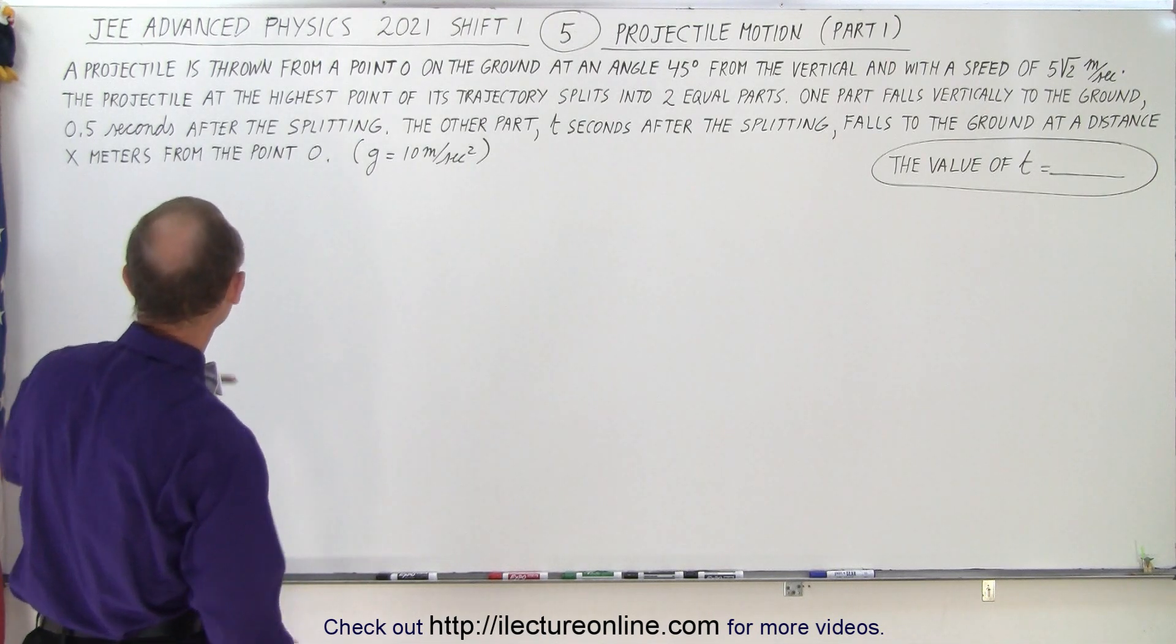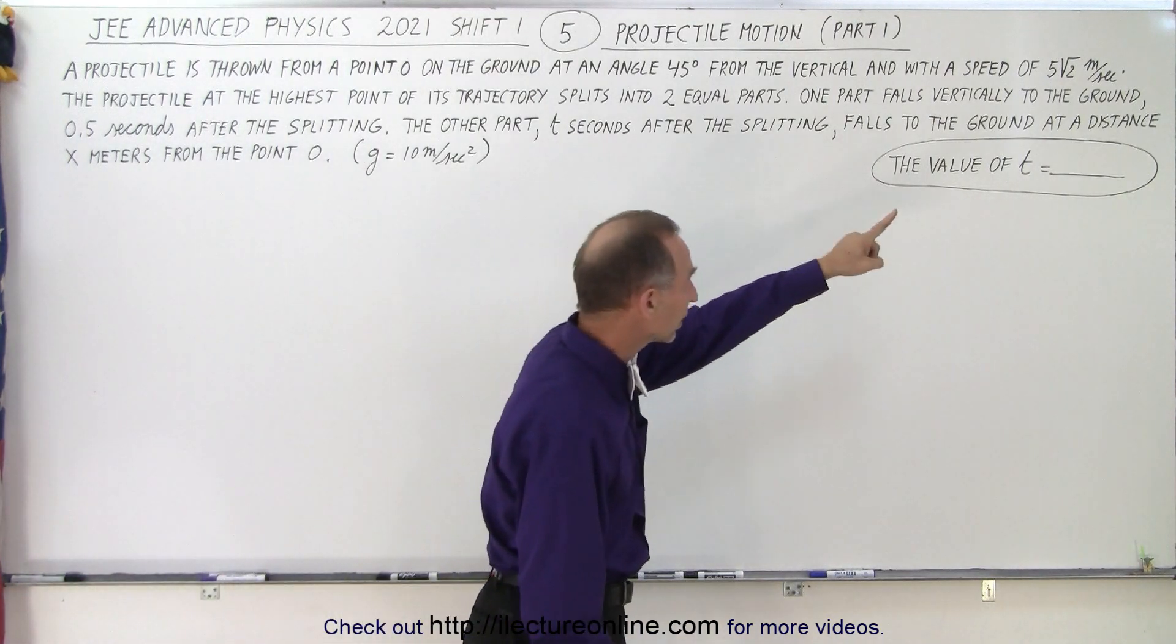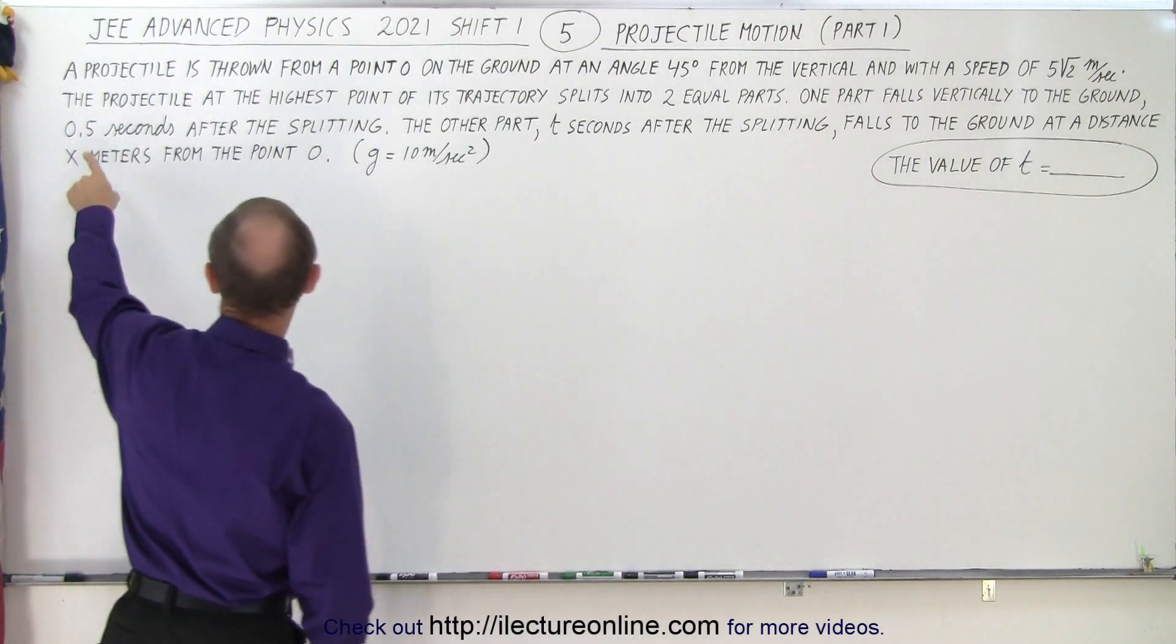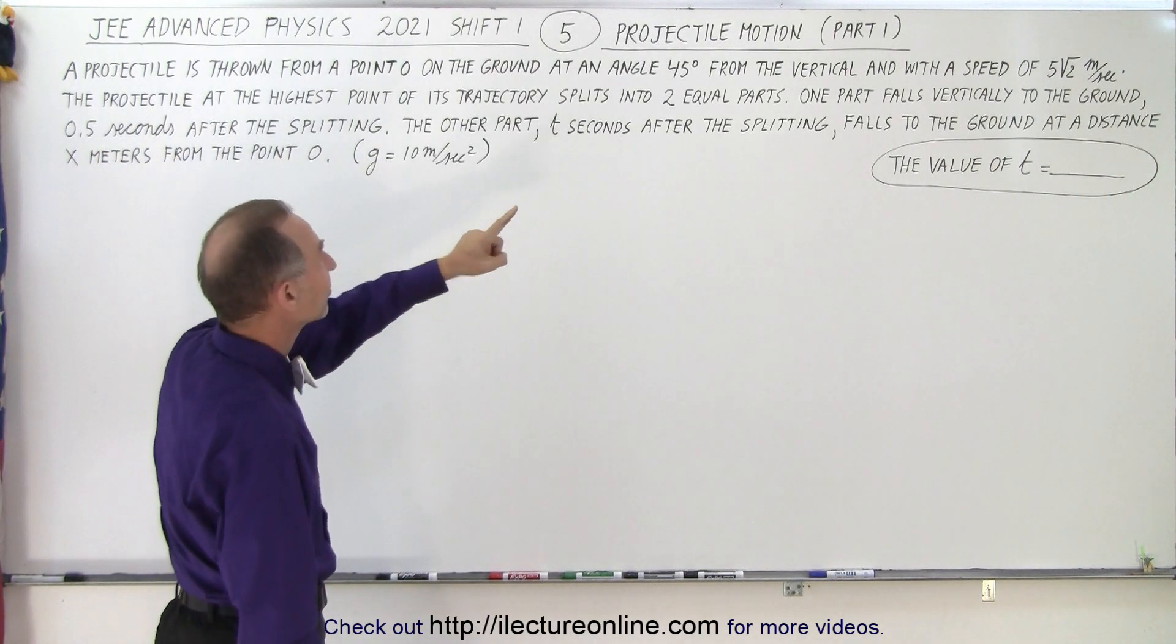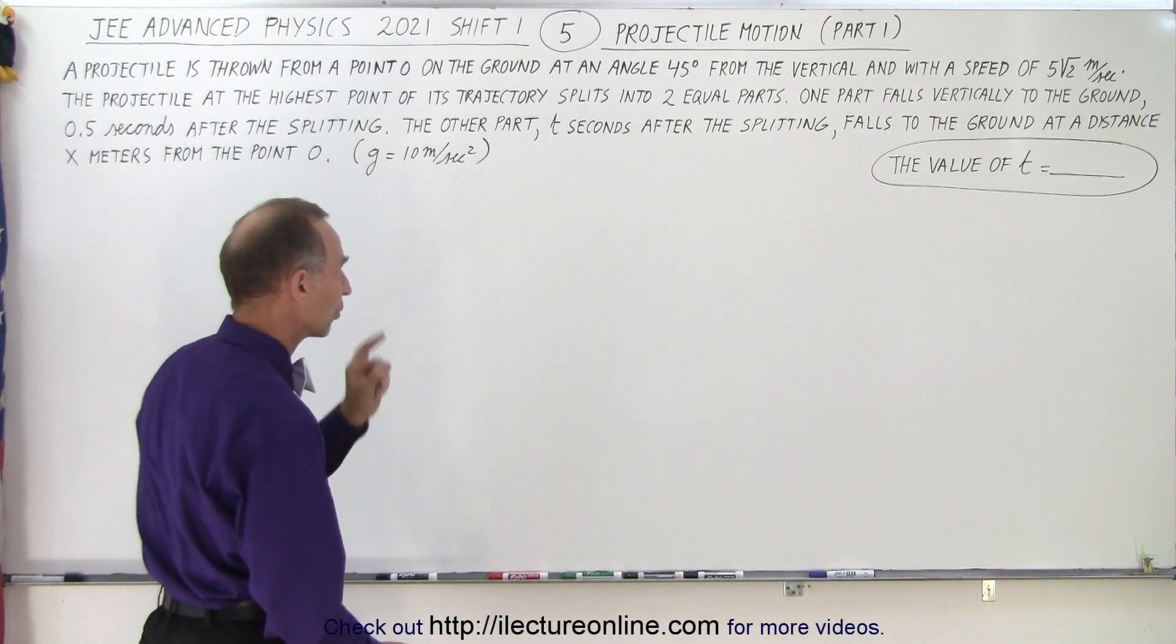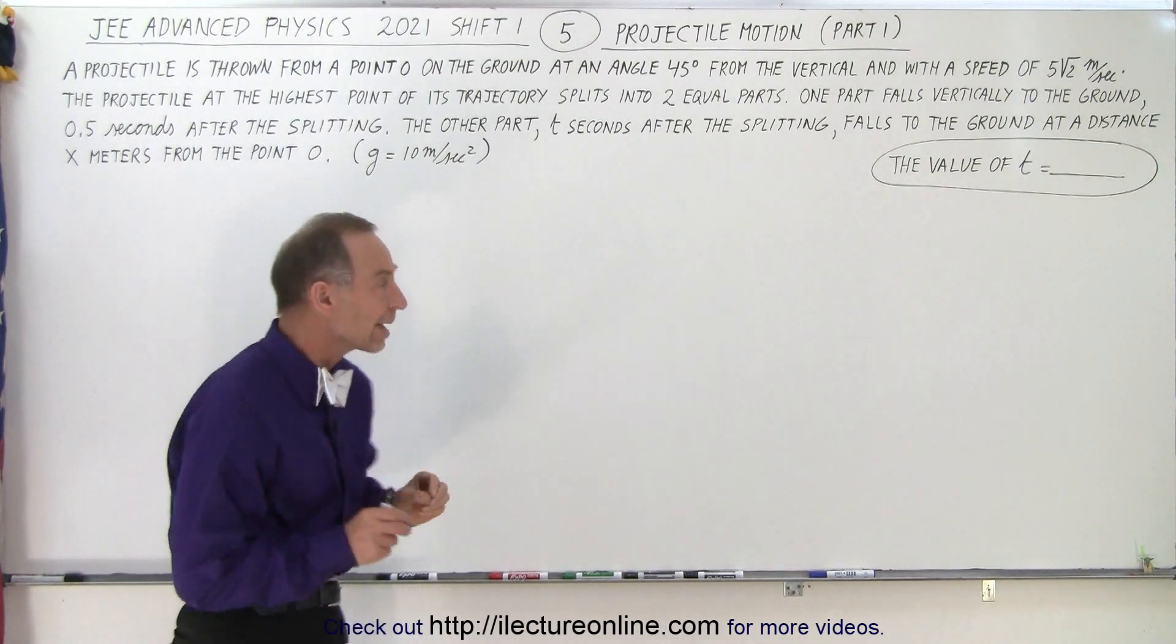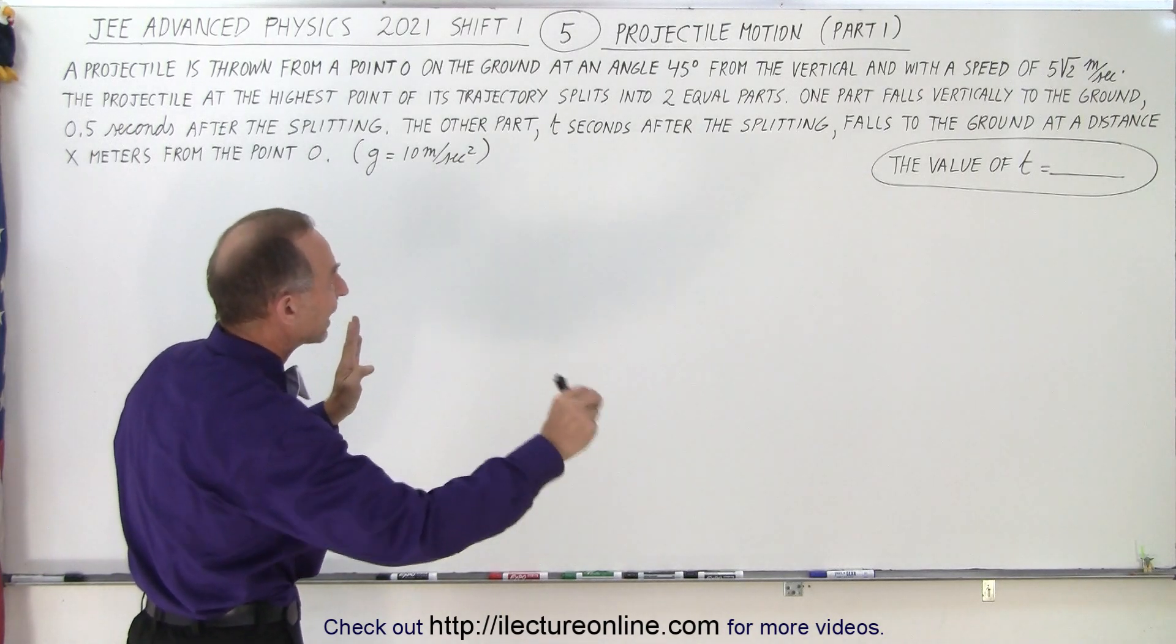Find the value of t. So let's read that again here. It says one part falls vertically to the ground 0.5 seconds after the splitting. The other part, t seconds after the splitting, falls to the ground at a distance x meters from point O. So they want us to find the time from the splitting to when the second part hits the ground.